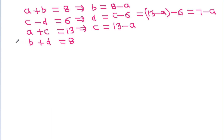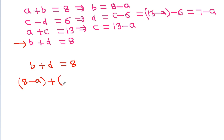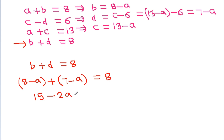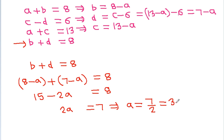And from this equation, we have B plus D is equal to 8. And B is 8 minus A, plus D is 7 minus A, that is equal to 8. And 8 plus 7 minus A minus A is 15 minus 2A, that is equal to 8. So, 2A will be equal to 15 minus 8 is 7. So, A will be equal to 7 by 2, that is 3.5.